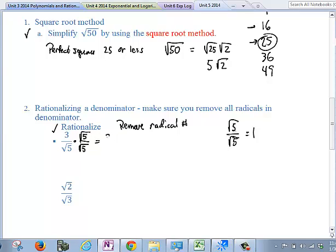As a result, we end up getting 3 root 5 over root 25, which simplifies to 3 root 5 over 5. And now my fraction will have been rationalized or the denominator would have been rationalized.